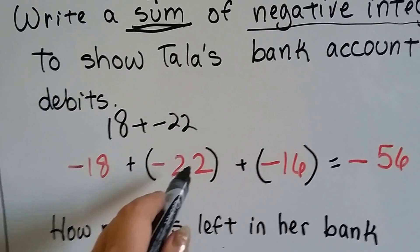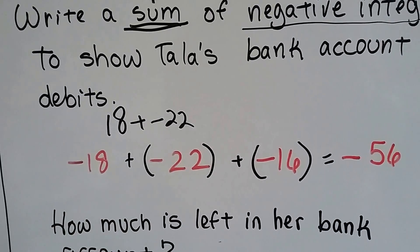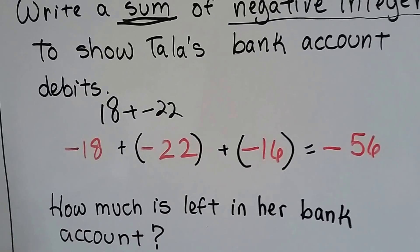So we put these parentheses around it. And that separates that negative 22 from the plus sign. So we can see we're adding a negative number. See? A little easier on the eyes. All right?